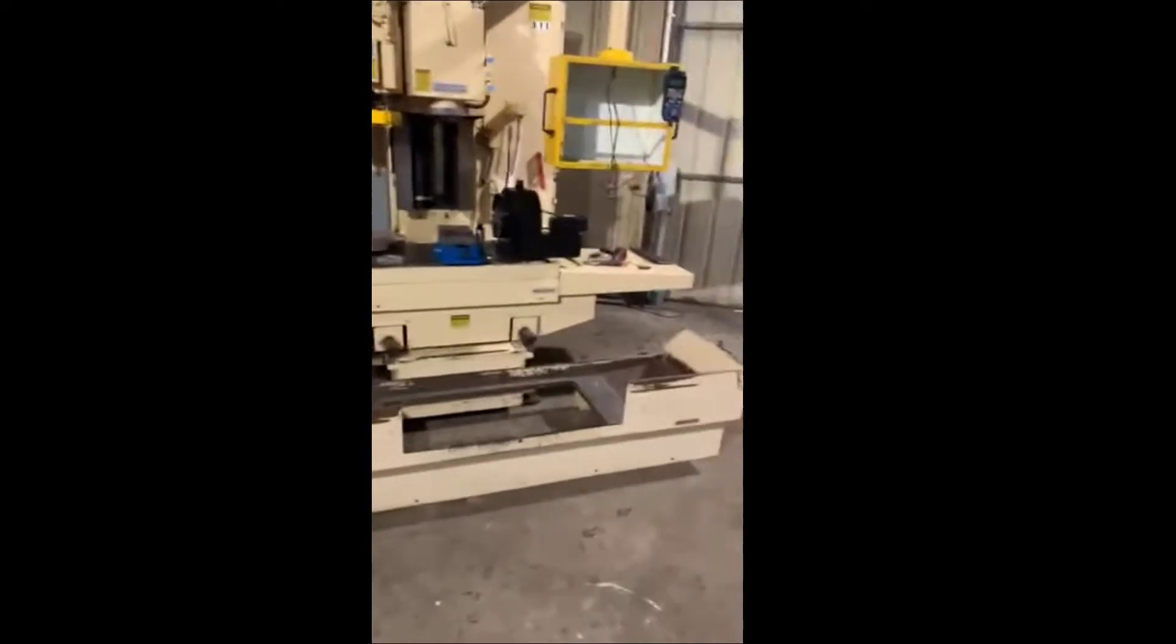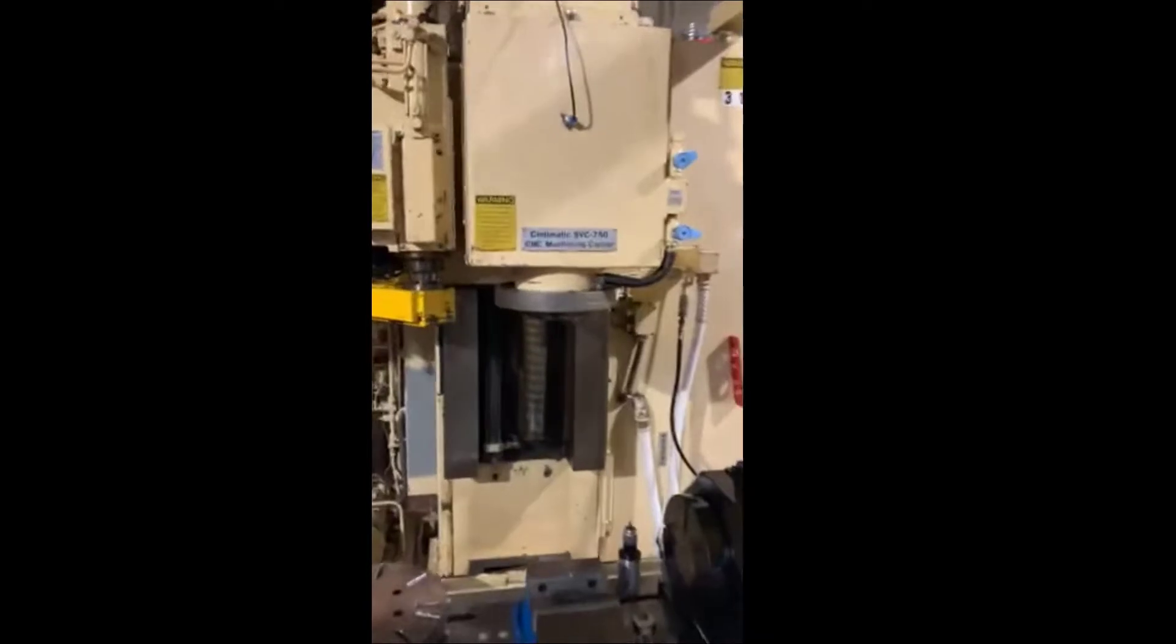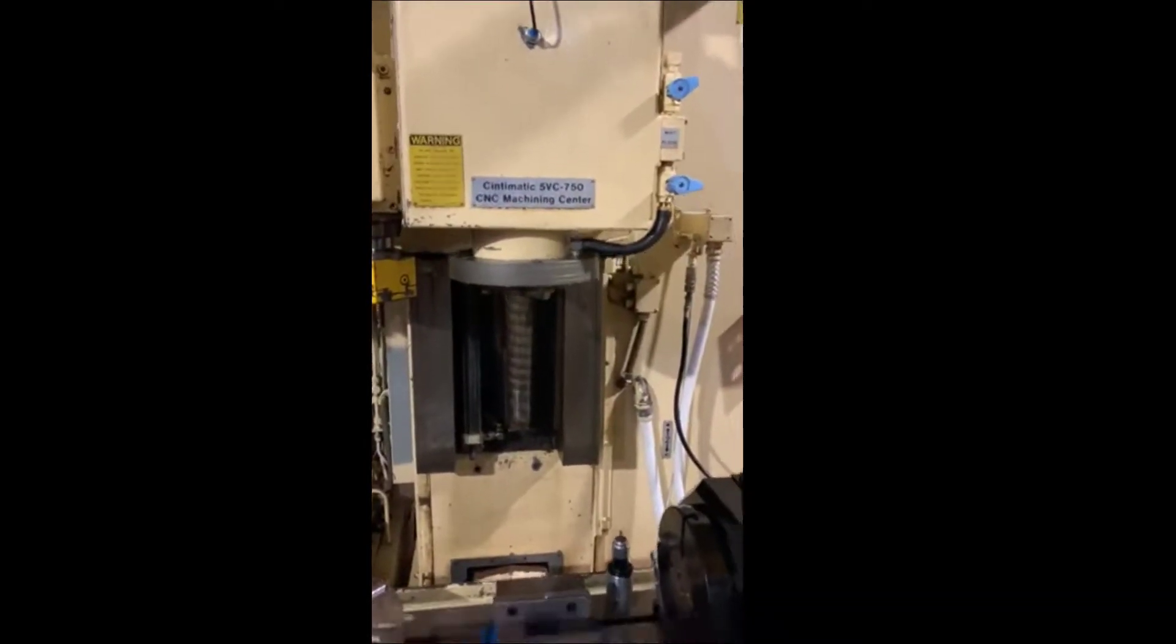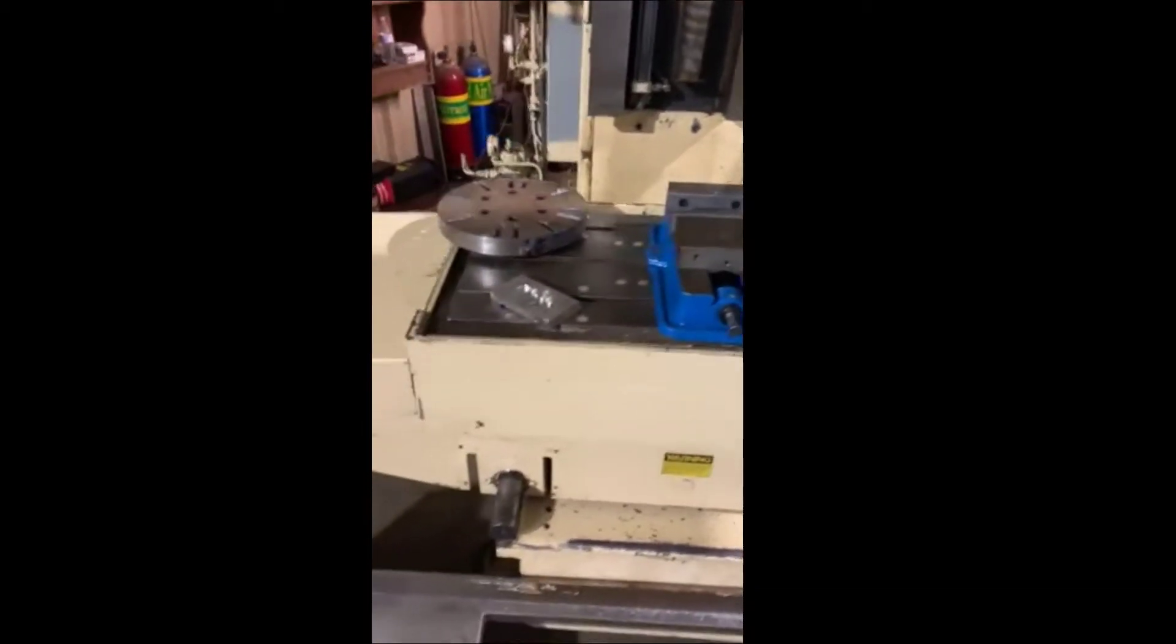Hi guys, how you doing? Trying to show you a little bit of this machine. Cincinnati 5 DC 750, it came with a four-axis. I'm gonna tell you a little bit about it later on.